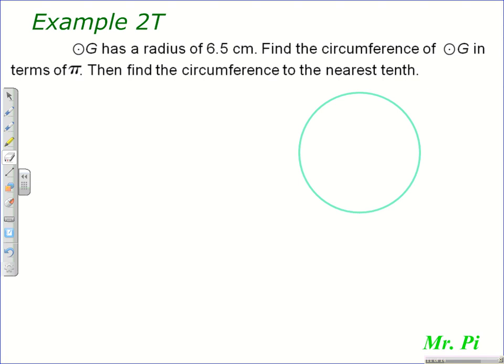is going to involve finding the circumference of a circle. Circle G has a radius of 6.5 centimeters. Find the circumference of circle G in terms of pi, then the circumference to the nearest tenth.